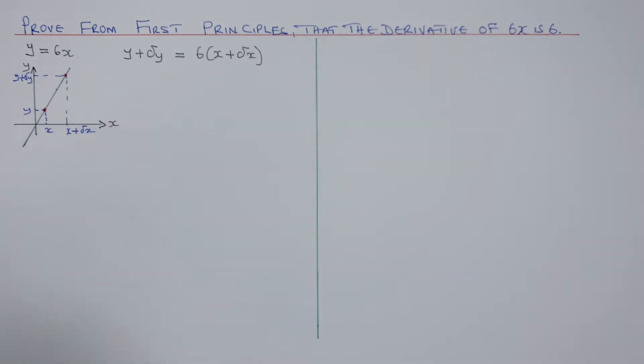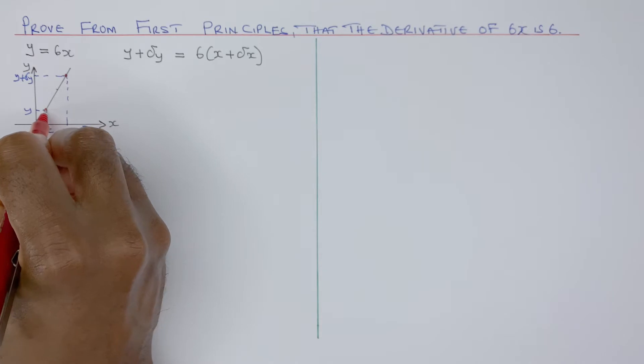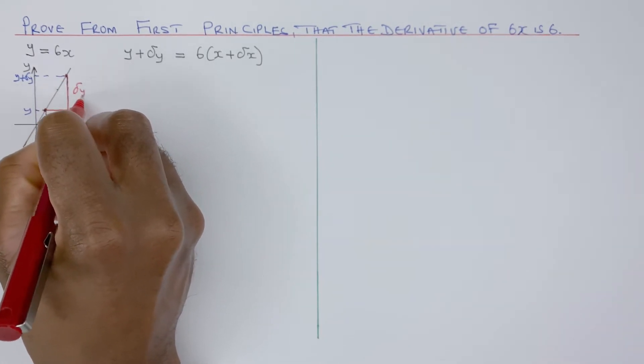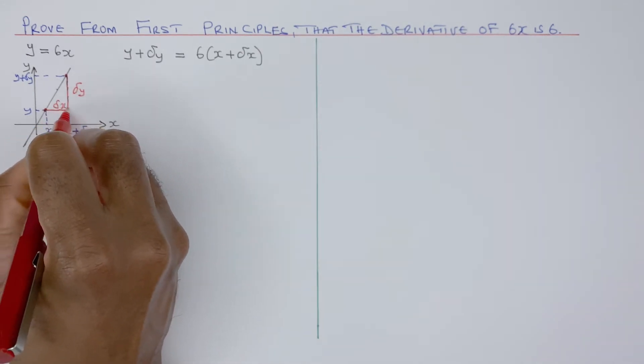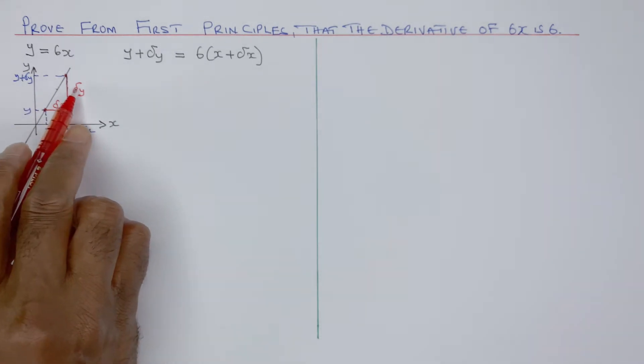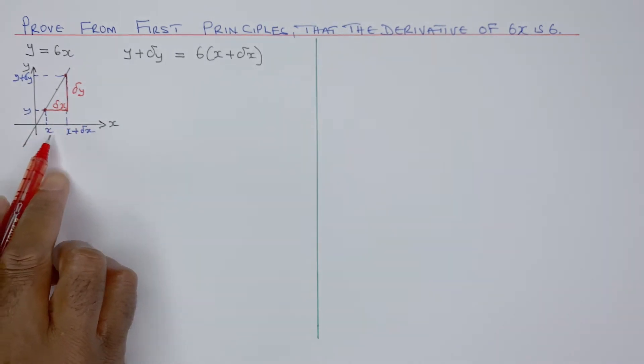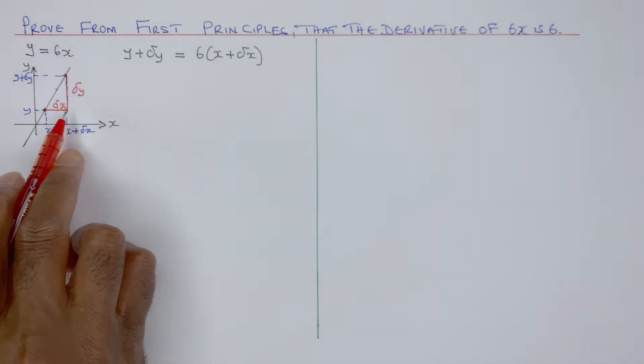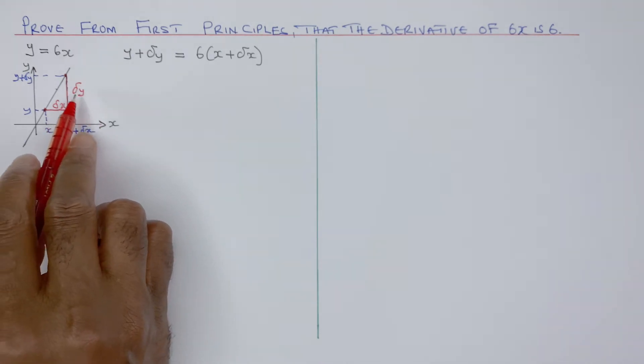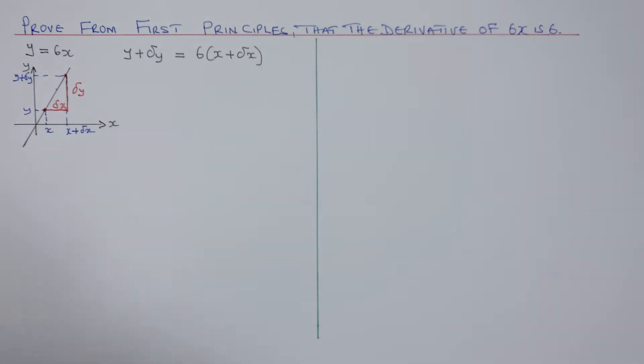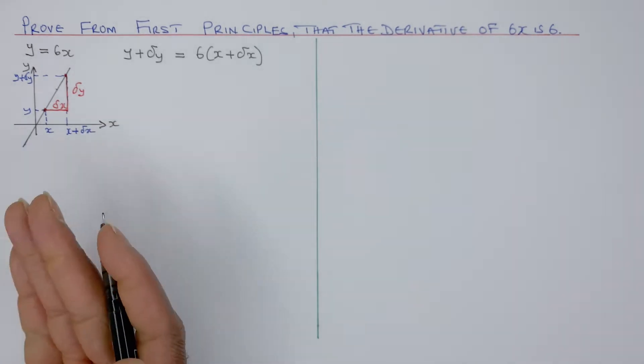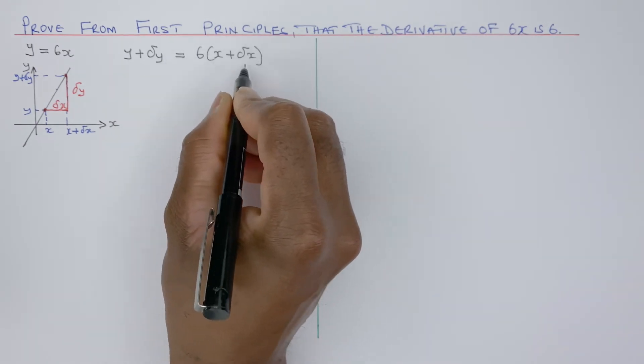Because to find a gradient, the gradient is going to be that width and that height. And that height is delta y and that width is delta x. If you take away that from that, you get delta y. And if you take away that from that, you get delta x. And the gradient is delta y over delta x. I need to make delta y the subject, because that's what I want.